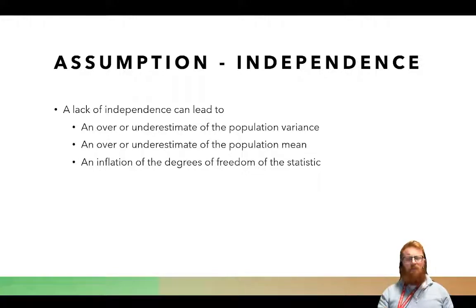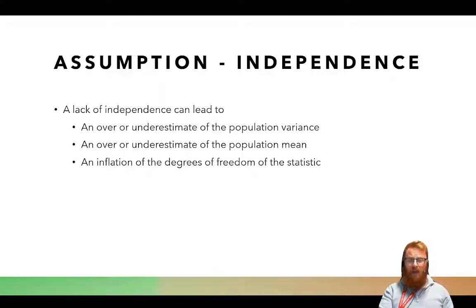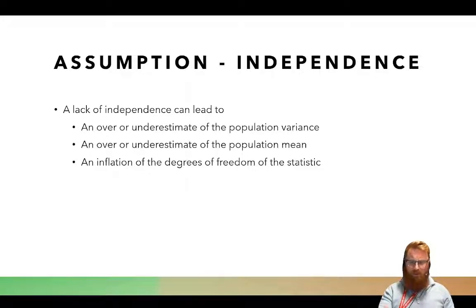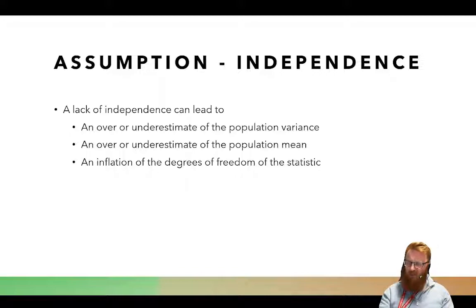But it's a bit more complicated than that. A lack of independence can lead to an over- or underestimation of the population variance — how variable the data truly is — an over- or underestimation of the mean of the population, and an inflation of the degrees of freedom of the statistic. To put that more simply: if I did that test where I had two people and took 100 measurements from one and 100 from the other, is N 200 because I took 200 recordings, or is N really two?